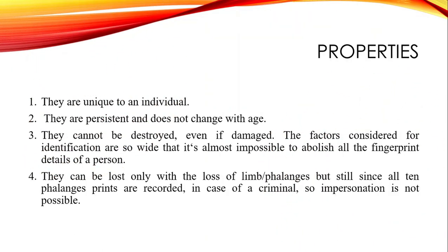There are some specific properties of fingerprints: they are unique to an individual; they are persistent and do not change with age; they cannot be destroyed easily — the factors considered for identification are so wide that it is almost impossible to abolish all the fingerprint details of a person. They can be lost only with the loss of the limb phalanges. Impersonation is not possible — if someone tries to hide or manipulate their identity, it can be identified using fingerprints.